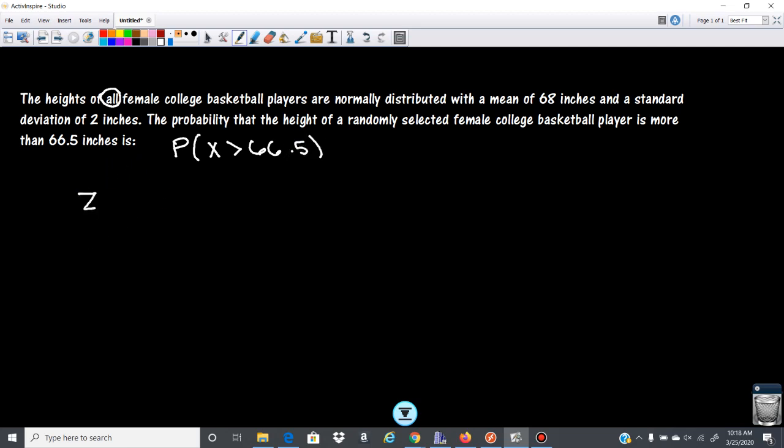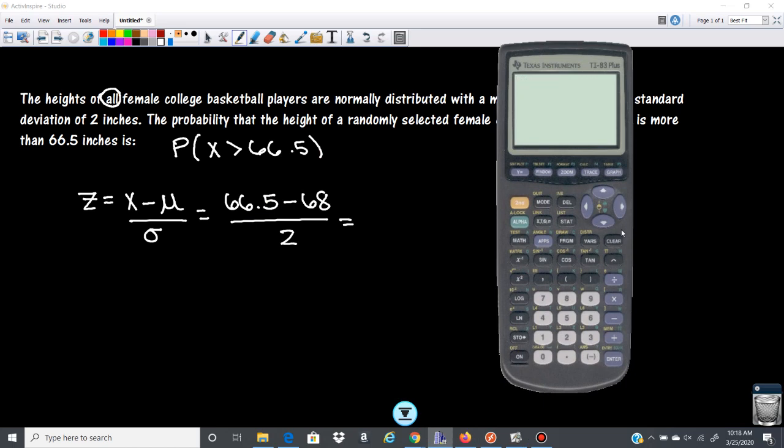We're going to go z. Z is x minus the mean over the standard deviation. So we would go 66.5 minus 68 over 2. We'll go ahead and we'll do that. 66.5 minus 68 divided by 2 gives us negative 0.75 is our z here.